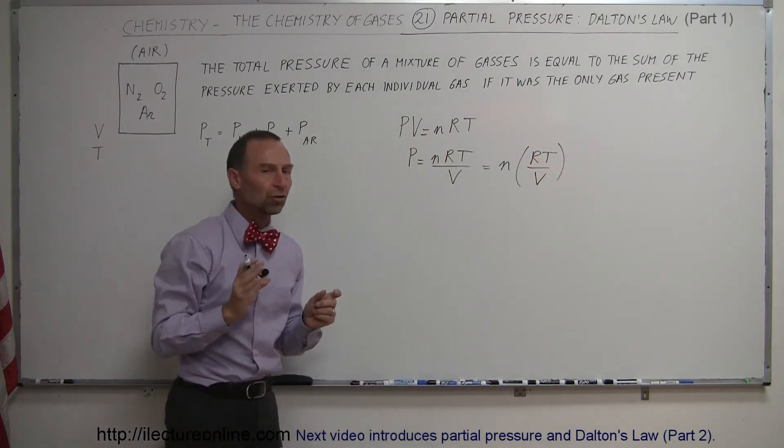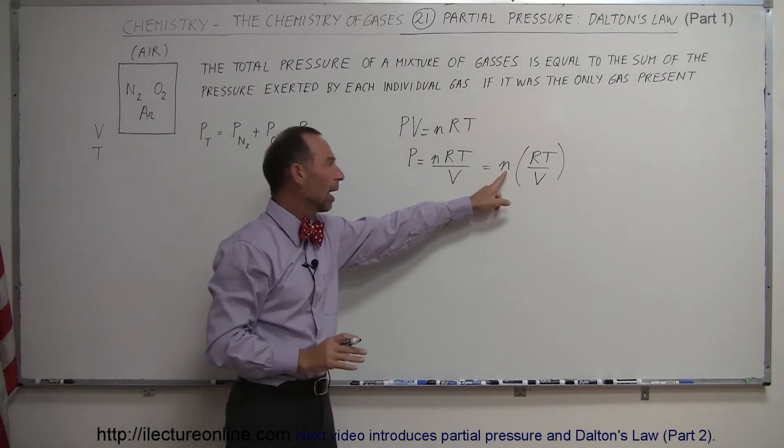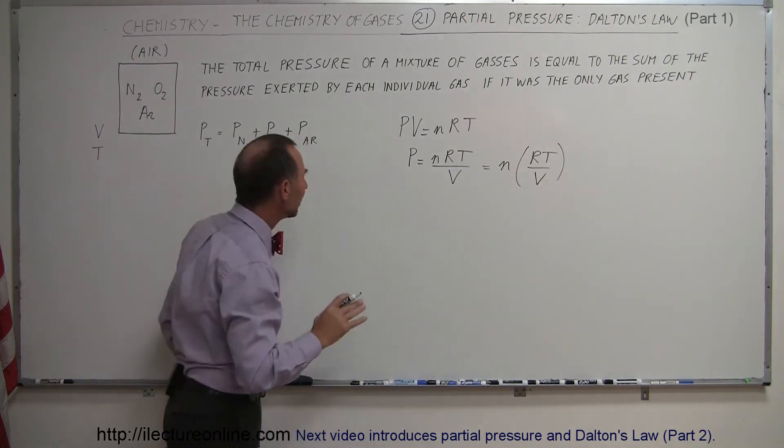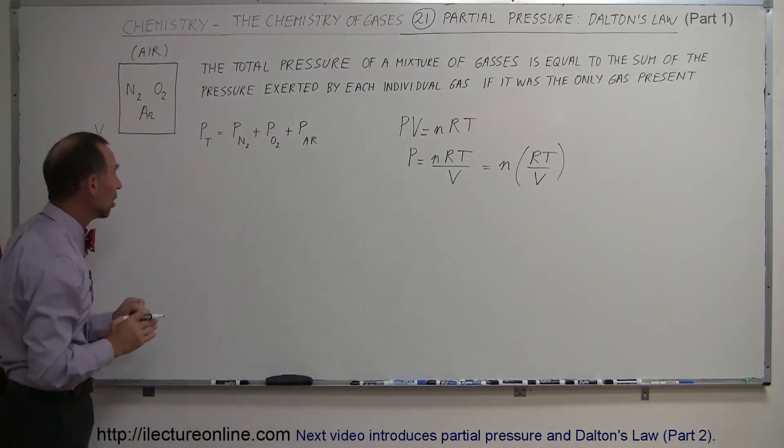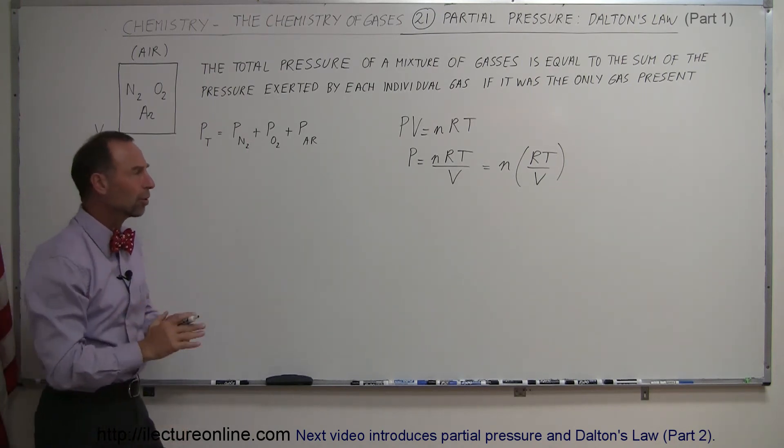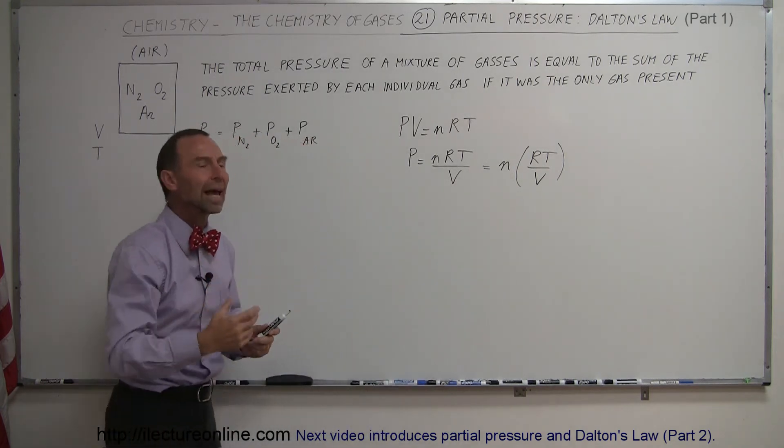Which means that the pressure caused by each component of the gas is simply equal to how many moles of the gas we have present times RT over V. And of course, RT over V would be the same for all three gases, because the volume of the container doesn't change, and we keep everything at the same temperature. So that means that the partial pressure really is proportional to the number of moles, how much of the gas we have there.